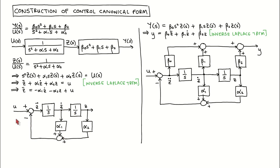We now move on to the second part of the transfer function. The output y can be written as the numerator times z. After applying the inverse Laplace transform, we get this equation. We can now add this equation to the block diagram, giving us: y equals beta-0 times z-double-dot, plus beta-1 times z-dot, plus beta-2 times z. This block diagram is now a valid representation of the transfer function.